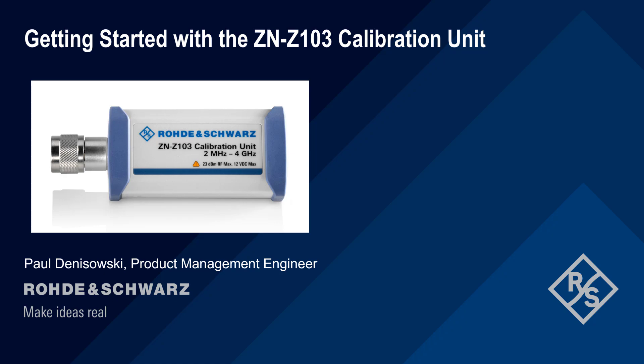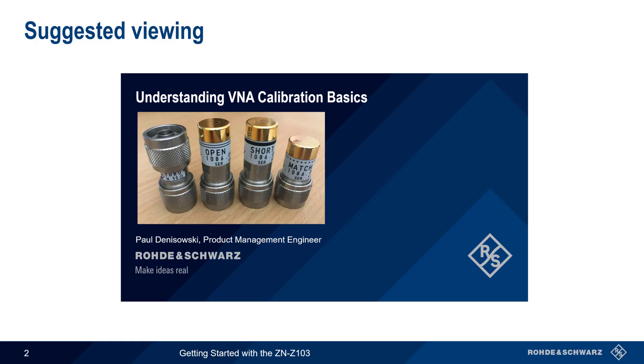Hello and welcome to this presentation: Getting Started with the ZN-Z103 Calibration Unit. This presentation provides a quick overview of the Rohde & Schwarz ZN-Z103 and how it's used to perform automatic calibration of Rohde & Schwarz network and spectrum analyzers. This presentation assumes a basic familiarity with network analyzer measurements and calibration. If you're not already familiar with these topics, you might want to watch the presentation Understanding VNA Calibration Basics before beginning.